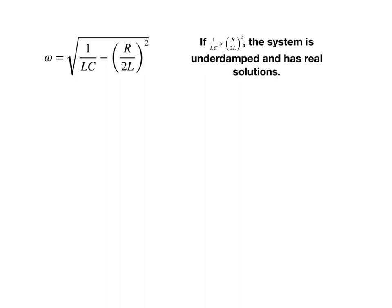If the quantity 1 over LC is larger than quantity R over 2L squared, we have real solutions. Notice that will result in a positive number under the radical. We have real roots that we can take. And the system has real solutions and will oscillate. That is, if it has real solutions, there is a non-zero oscillation frequency. So the system will oscillate.